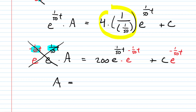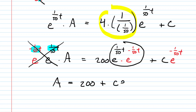The remaining term is the constant of integration C times e to the negative one-fiftieth t. We can now work towards finding that constant of integration because we have an initial condition.